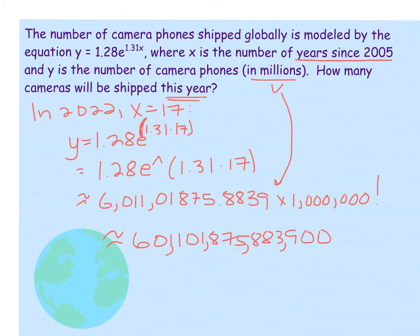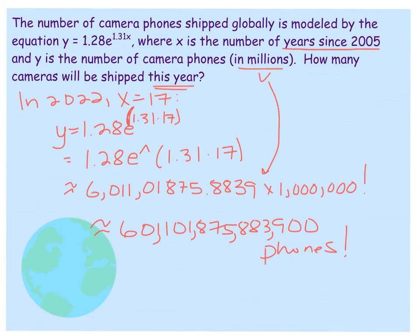I'm pretty sure this model is skewed a little bit. It probably was more in 2005, and I'm guessing it would have tapered off this year. That's a lot of camera phones. And I think that's a good point to end our video. We'll finish the interest problem that's at the bottom tomorrow in class.